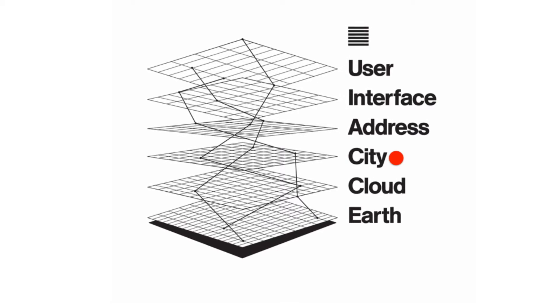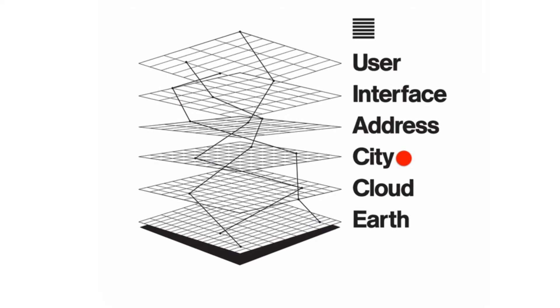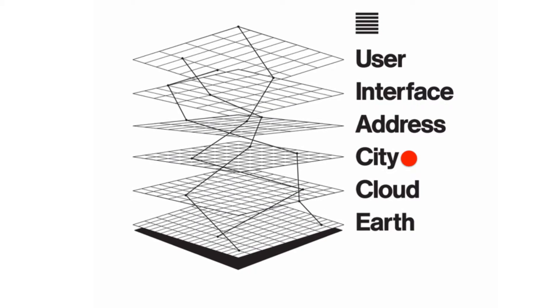The model is based on the software and hardware stacks, the OSI-TCIP stack of interlocking modular layers in which you have specific technologies that are dedicated to specific tasks. In the book, I use the scheme of an earth layer, cloud layer, city layer, address layer, interface layer, and user layer, and talk a bit about the history of these and how they interrelate with one another.